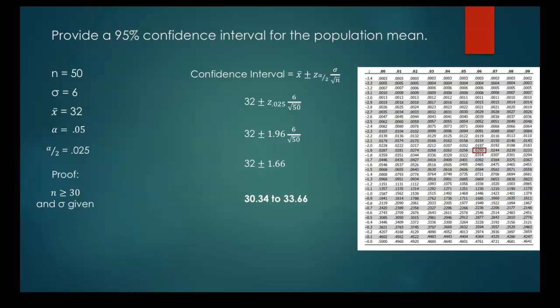So then 32 plus and minus that 1.66 gives us a confidence interval of 30.34 to 33.66. So again, we're 95% confident that the population mean will be somewhere between 30.34 and 33.66.